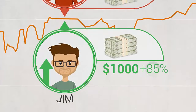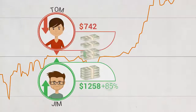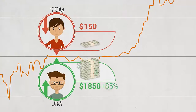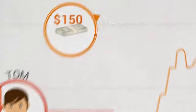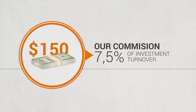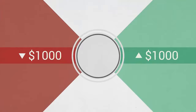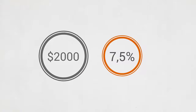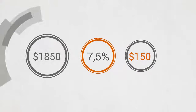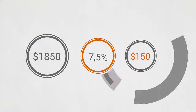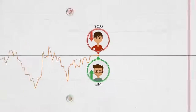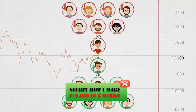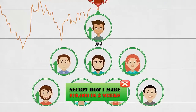The price of the asset went up. Jim was right — he gets the promised 85% return, which is deducted from Tom's investment. The remaining percentage is the broker's commission, which is 7.5% of the turnover. In this example the turnover was $2,000, so 7.5% of that sum amounts to a commission of $150.